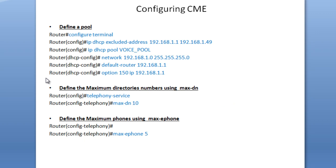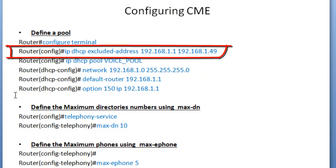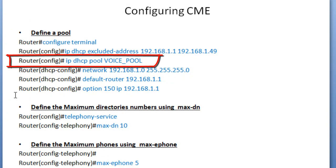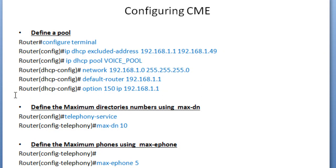For the CME configuration, first we need to define a DHCP pool. I hope you already know how to configure DHCP to make this CME the DHCP server. You'll define the excluded addresses, give the pool a name, define the network, set the gateway, and Option 150 is very important — it tells the IP phone to use that IP address as the TFTP server, which is the IP address of the CME or router.